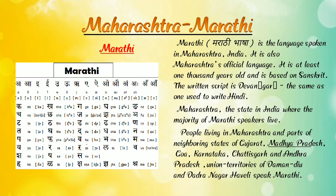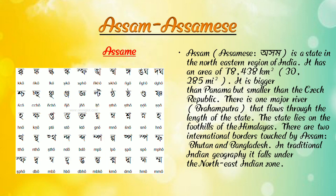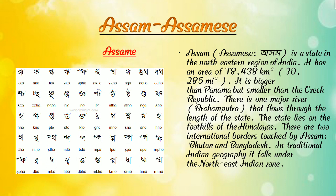Now we are going to learn about Assam — Assamese language. In the state of Assam, Assamese language is spoken. Here we can see a photograph of the Assamese language. Assam is a state in the north-eastern region of India.